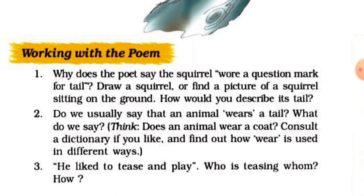Next question: 'He liked to tease and play.' Who is teasing whom? How? Answer: The poet liked to tease and play with the squirrel. But whenever he tried to run around the tree to play with the squirrel, the squirrel would run away in the opposite direction.